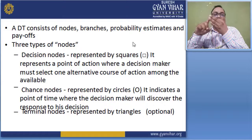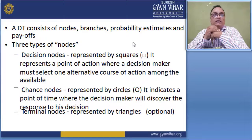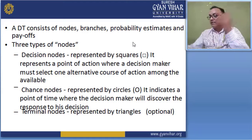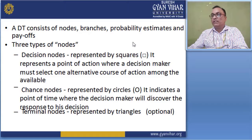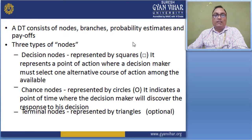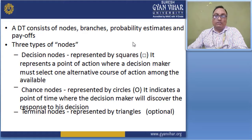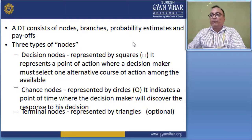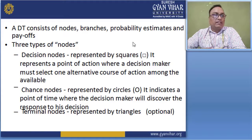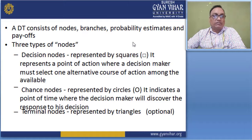The first is the decision node, represented by a square. It represents a point of action where a decision maker must select one alternative course of action among the available options.